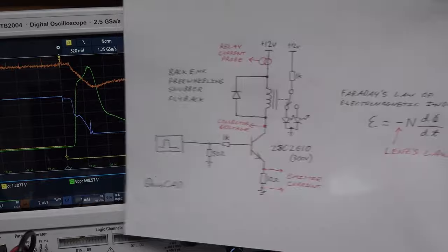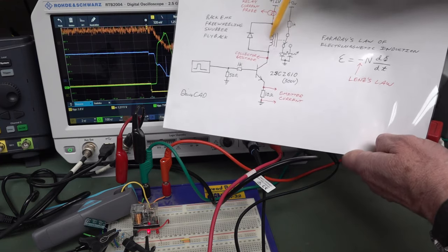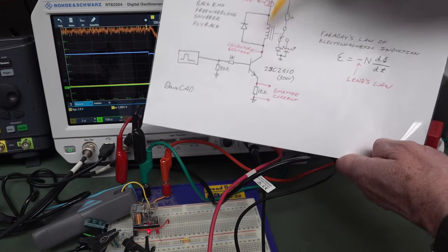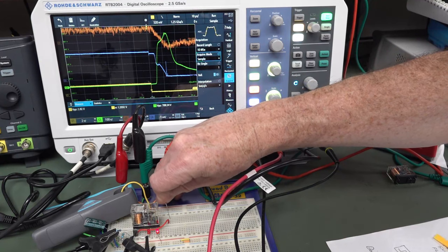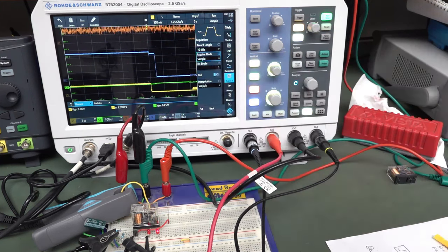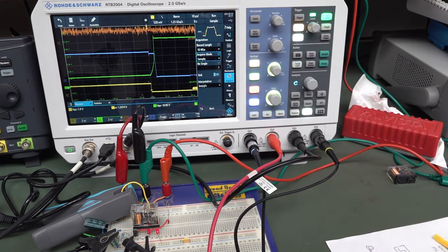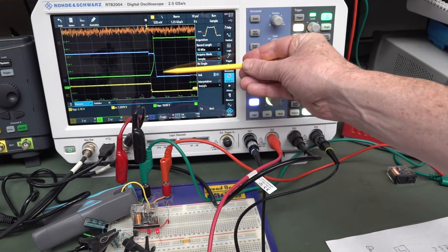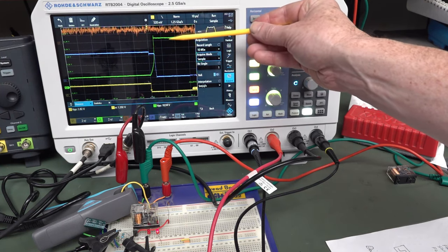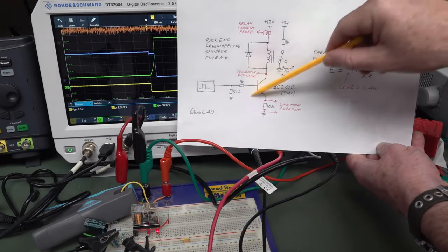Now putting the back EMF diode in across the relay coil — that will conduct all the current, keep it circulating within the loop, and clamp the voltage to 12V plus a diode drop. The green trace has dropped dramatically. At 2 volts per division, we can measure: the voltage is clamped at 12.6V — that's our diode drop. We have now saved our transistor or driving circuit from the hundreds of volts peak we had before.